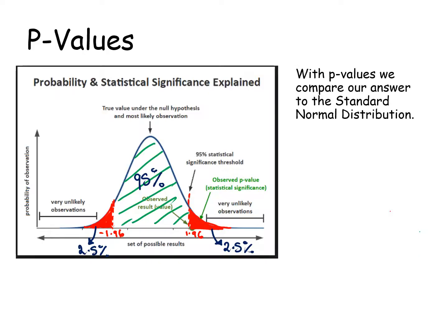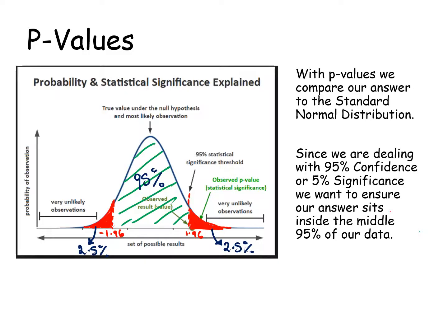With p-values, we want to compare our answer to the standard normal distribution. Since we're dealing with 95% confidence or 5% level of significance, we want to ensure that our answer sits inside the middle 95% of our data. Basically those z-scores minus 1.96 and 1.96—we want to sit between those.